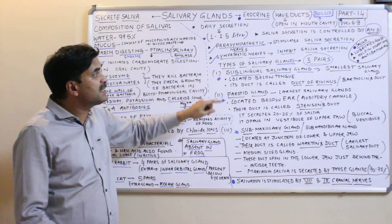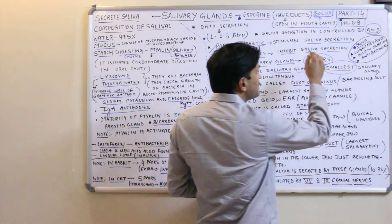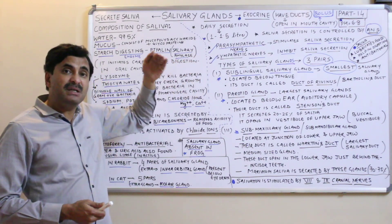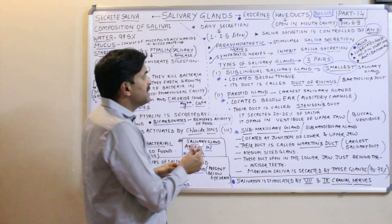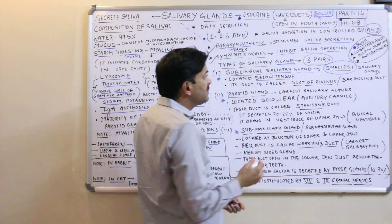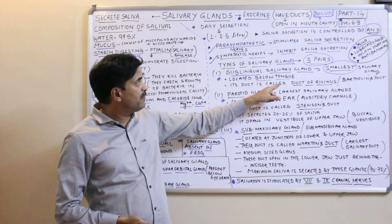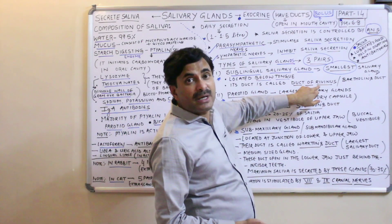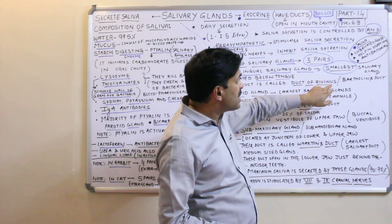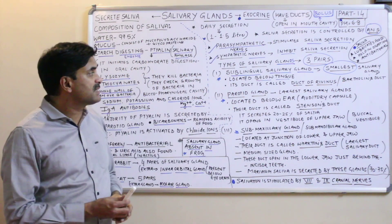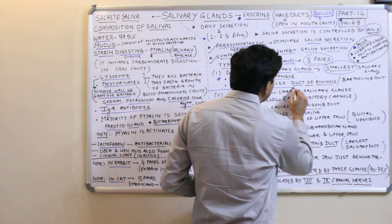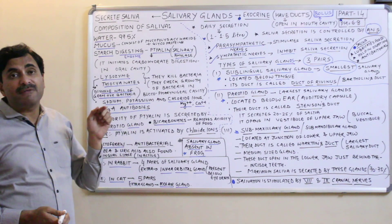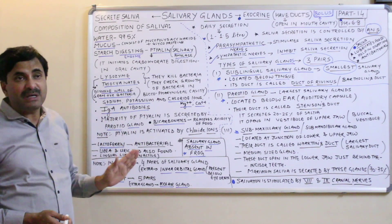The sublingual salivary gland is the smallest salivary gland out of the three pairs. As the name indicates, 'sub' means below and 'lingual' means tongue, so this gland is found below the tongue. Its duct is called the duct of Rivinus, also known as Bartholin's duct. This duct opens on the ventral surface of the tongue.